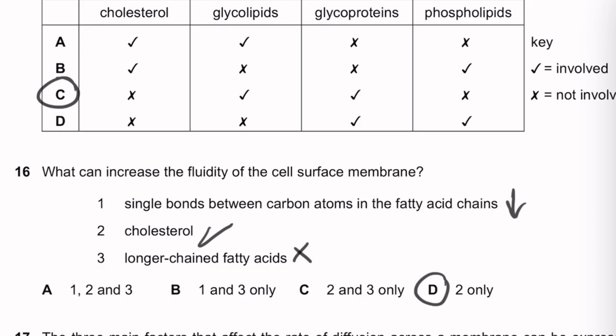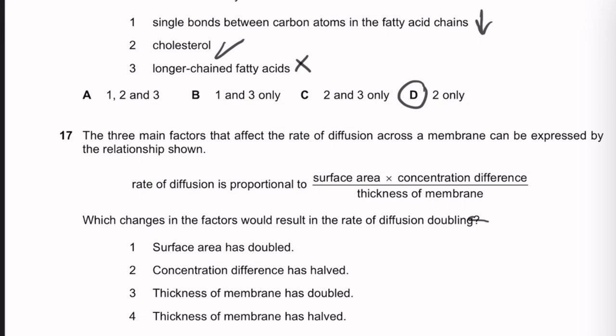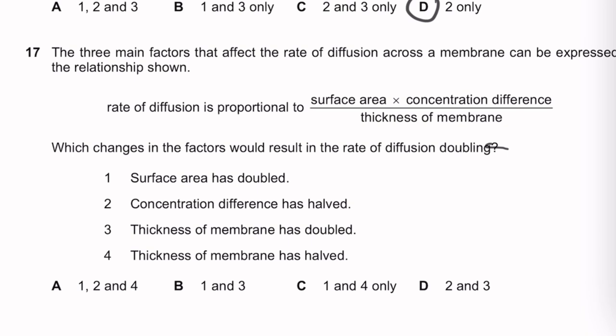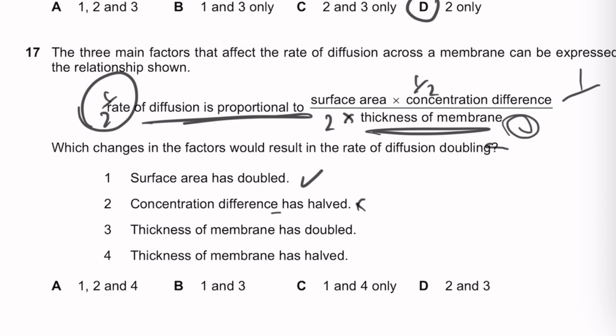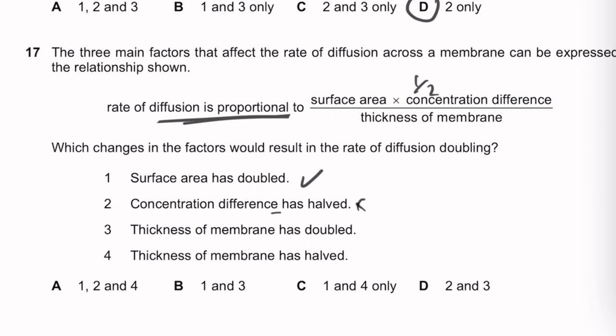Question 17: The rate of diffusion is proportional to surface area × concentration difference ÷ thickness of membrane. Which changes double the rate? Surface area doubled — doubles the rate, correct. Concentration difference halved — halves the rate, wrong. Thickness doubled — halves the rate (inversely proportional), wrong. Thickness halved — doubles the rate, correct. So options 1 and 4 only — answer: C.